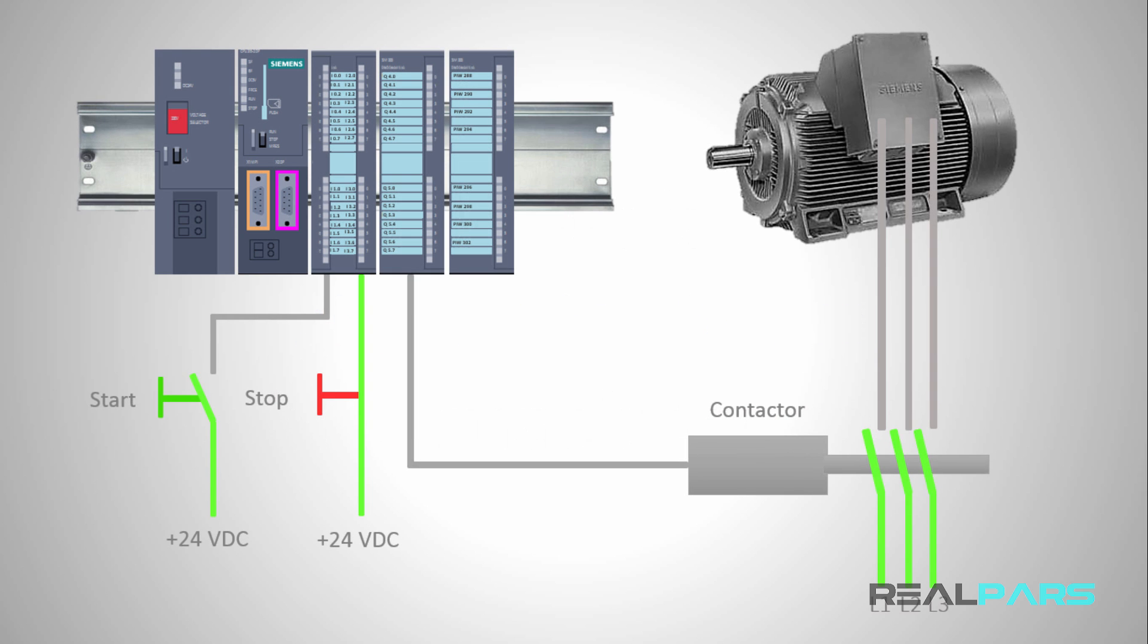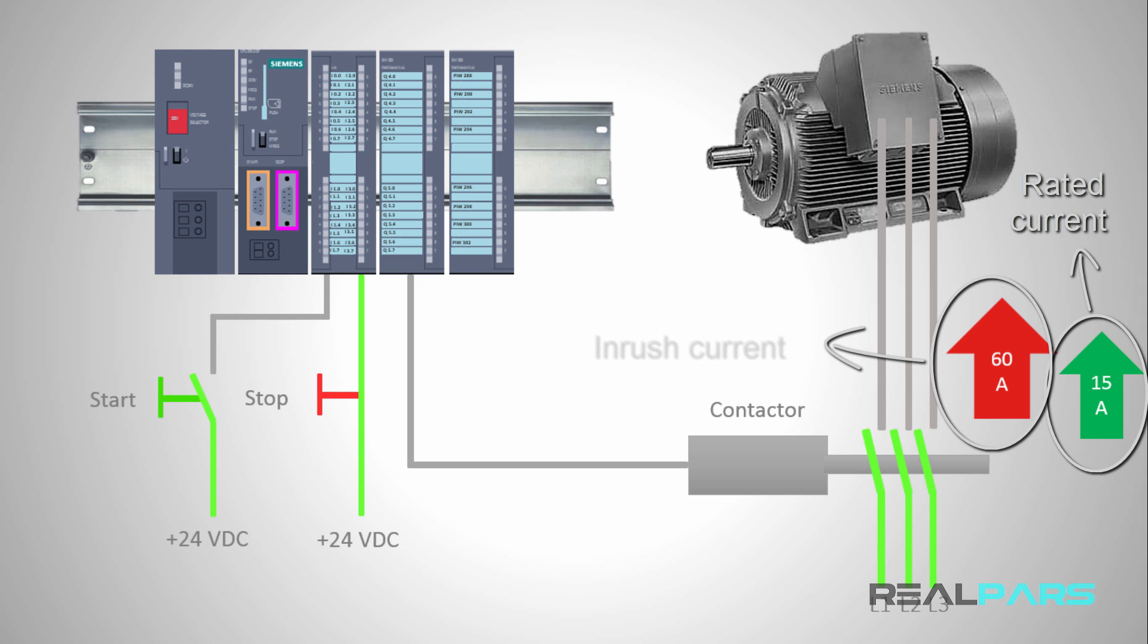When you start a large electrical motor, in the first few seconds that the motor is starting, it will draw much more current than the rated current. This is called the inrush, or start current. For instance, if you have an electrical motor that draws 15A during normal running operation, at the moment of starting the motor, this current can increase up to 60A, that's 4 times greater than the rated current.